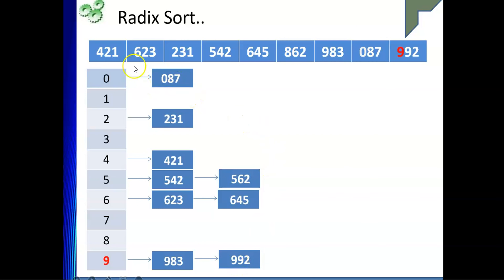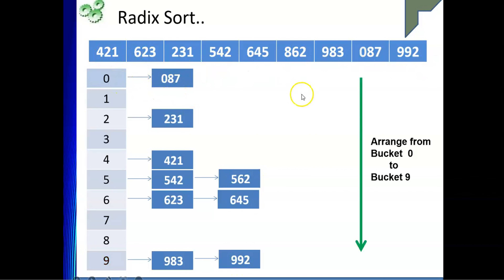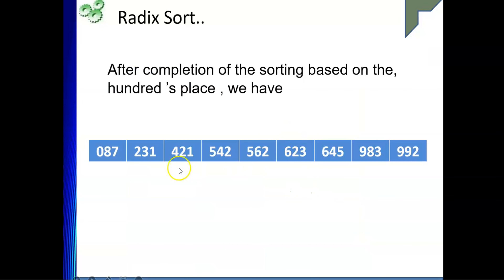We have now sorted on the most significant digit. Since we have three-digit numbers, this is done in three passes. Reading from bucket 0 to 9 we get: 087, 231, 421, 542, 623, 645, 862, 983, 992. The elements are now in fully sorted form. Radix sort works by sorting digit by digit, from the least significant to the most significant digit.